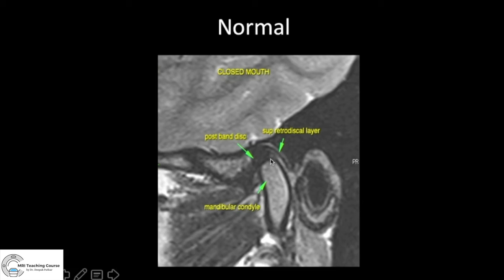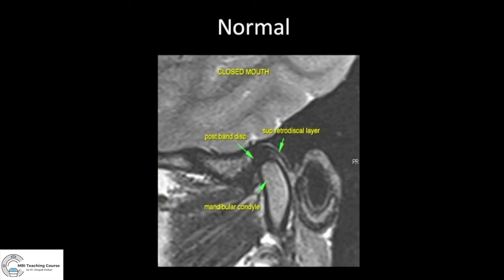How do we know if it's normal? The articular disc has an anterior band, a posterior band — both thick — and a thinner intermediate zone. Look at the junction between the posterior band and the bilaminar zone or retrodiscal layer. That junction should be at approximately the 12 o'clock position with respect to the mandibular condyle; up to 10 degrees on either side is fine. Some articles say up to 30 degrees is also normal, as patients can be asymptomatic even with the disc moved 30 degrees anteriorly. You can also clearly see the retrodiscal layer and the lateral pterygoid here.